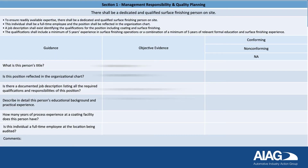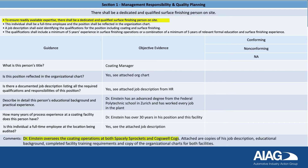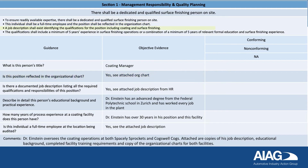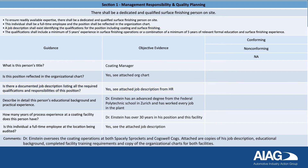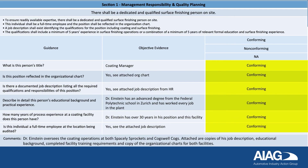Let's take a look at Section 1. To ensure readily available expertise, there should be a dedicated and qualified surface finishing person on site. This individual should be a full-time employee and the position shall be reflected in the organization chart. A job description shall exist identifying the qualifications for the position, including coating and surface finishing knowledge. The qualification shall include a minimum of five years experience in surface finishing operations, or a combination of a minimum of five years of relevant formal education and surface finishing experience. In this example assessment, the objective evidence supports a rating of conforming for all guidance.